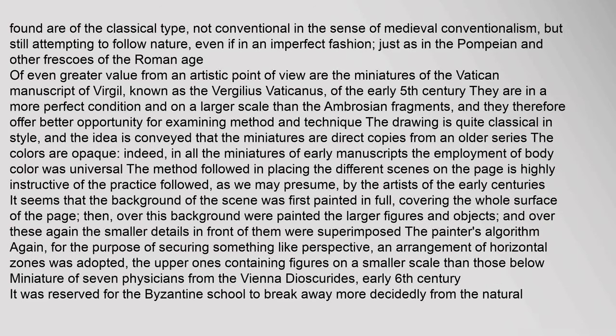Founder of the classical type, not conventional in the sense of medieval conventionalism, but still attempting to follow nature, even if in an imperfect fashion, just as in the Pompeian and other frescoes of the Roman age. Of even greater value from an artistic point of view are the miniatures of the Vatican manuscript of Virgil, known as the Virgilius Vaticanus, of the early 5th century. They are in a more perfect condition and on a larger scale than the Ambrosian fragments, and they therefore offer better opportunity for examining method and technique. The drawing is quite classical in style, and the idea is conveyed that the miniatures are direct copies from an older series.